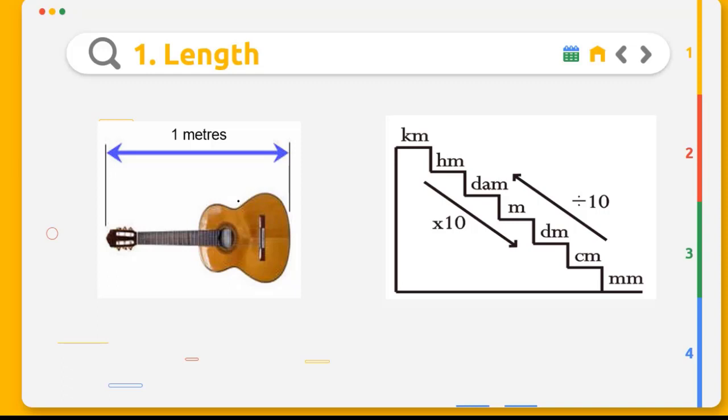To convert from meter to another unit measurement like centimeter or millimeter, for example, we want to convert from meter to centimeter. That means we have to go down two steps, so we multiply 1 meter by 100 because we go down two steps. It equals 100 centimeters.